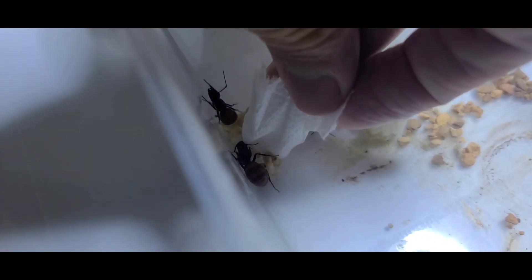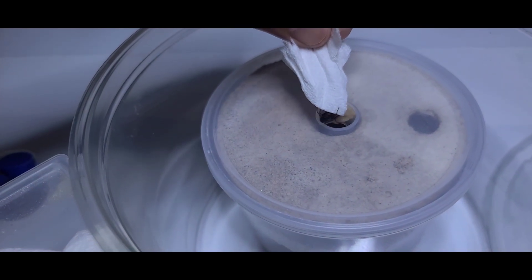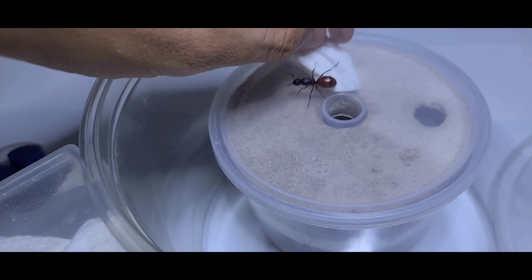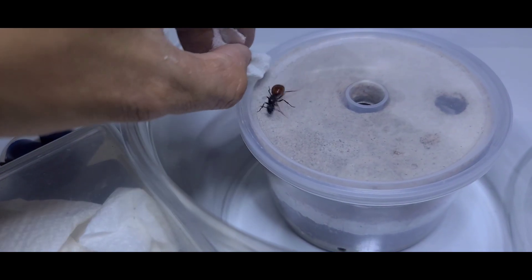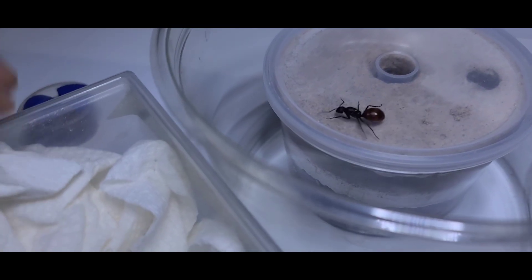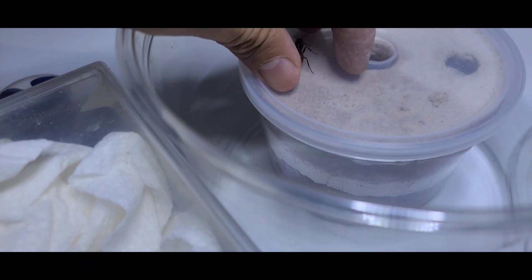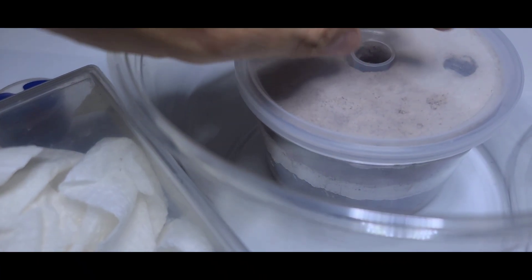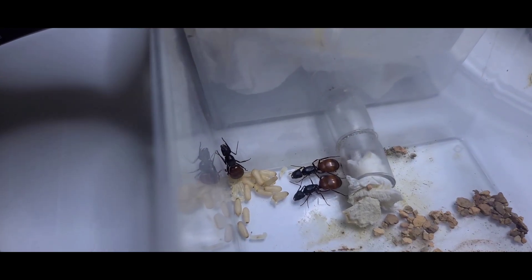I recommend once the colony has at least five to ten workers, you want to start transferring them before they get bigger than that, because it's going to be difficult when you're transferring a lot of workers and all the brood into a different formicarium. So yeah, that's the best time to do it - five to ten workers.